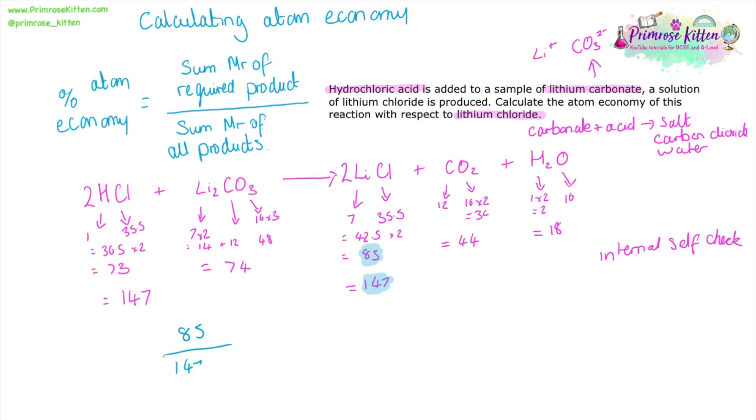This is an internal self-check you can do really quickly in the exam to check you've got the right answer and check you haven't made a mistake up to this point. The mass of our required product is 85. The mass of all the products is 147. So we're going to do 85 divided by 147. And if this is part of a longer answer, if you're going to be using this number later on, then please keep the number in your calculator. Remember, do not round it at this point. We can then take this number, this decimal, we need to time it by 100 because we are looking for a percentage, which will give us 57.8 as the percentage atom economy for this reaction.